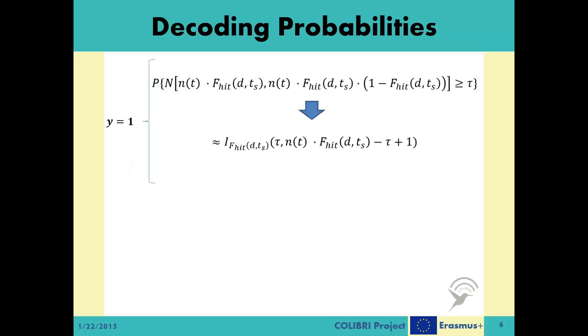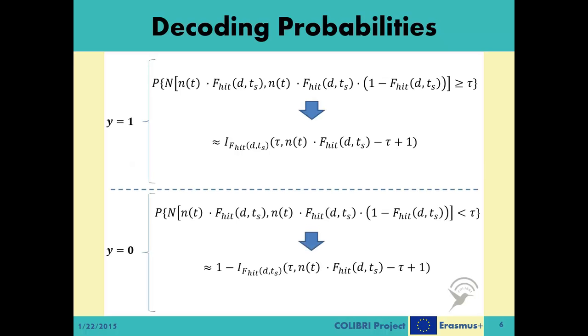Then the decoding probabilities where y equals 1 can be converted into a regularized incomplete beta function as shown here. And the complementary decoding probability where y equals 0 becomes 1 minus the same regularized incomplete beta function.